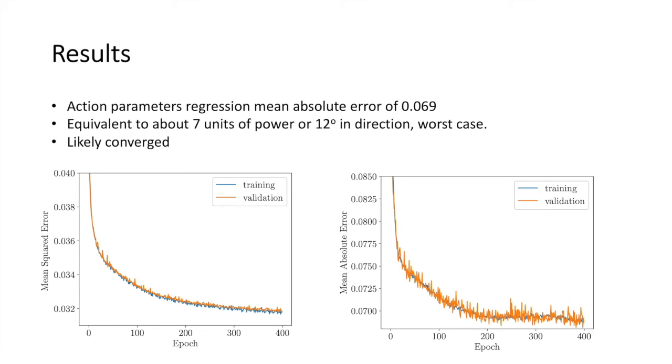For visualization purposes, this would be equivalent to around 7 units of power in dash and kick commands, or 12 degrees in the direction parameter. This is a worst-case scenario, since the error is calculated over all actions, whether selected or not.